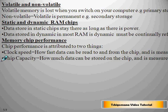A volatile memory is lost when you switch off your computer — for example, primary storage, which is the main memory, is volatile, meaning RAM is volatile. Non-volatile memory is permanent — for example, secondary storage.